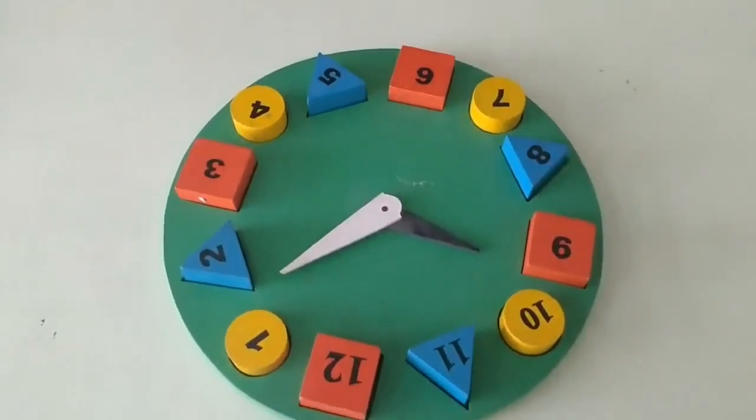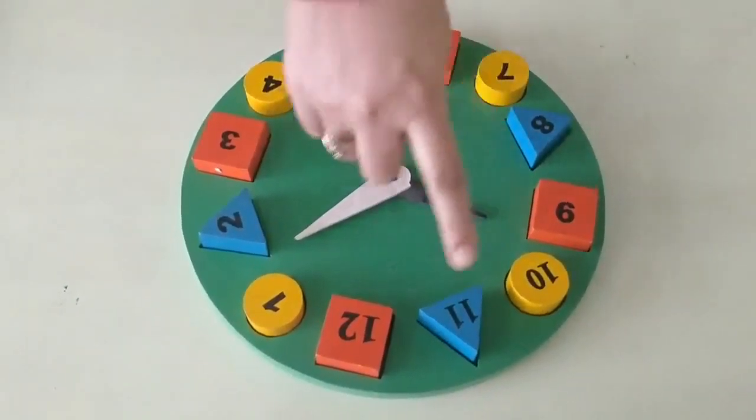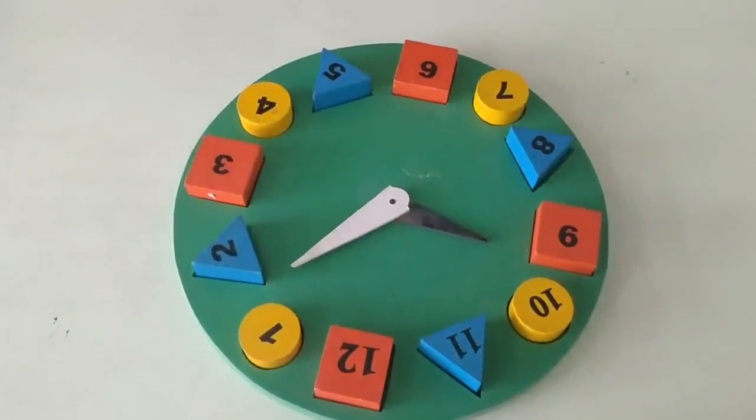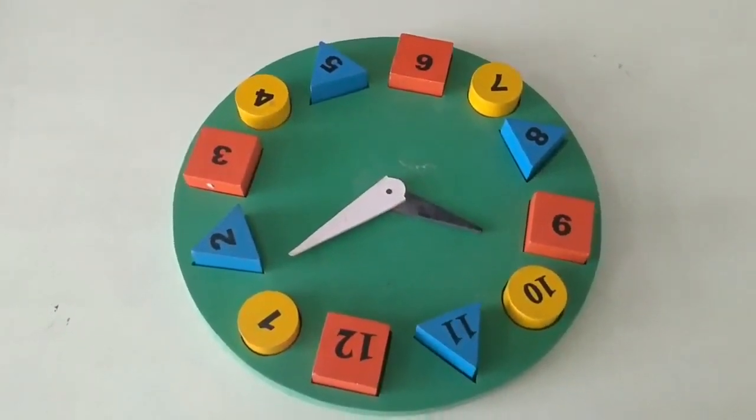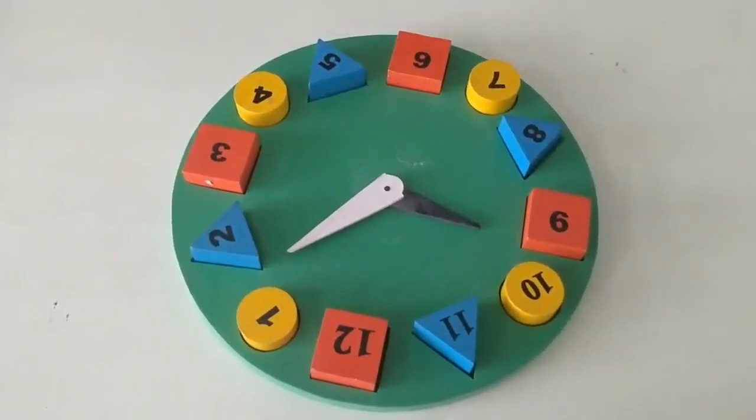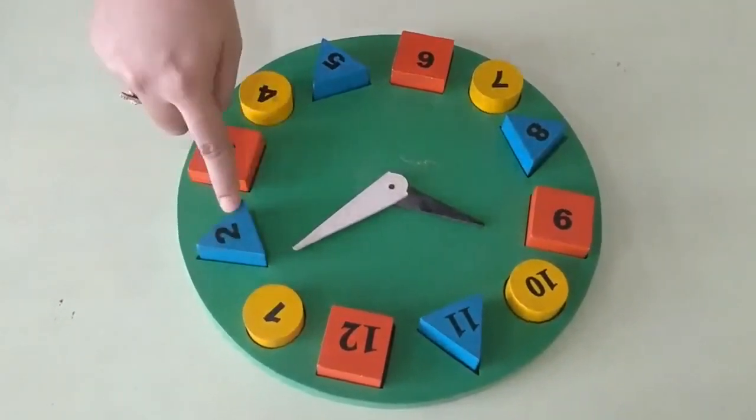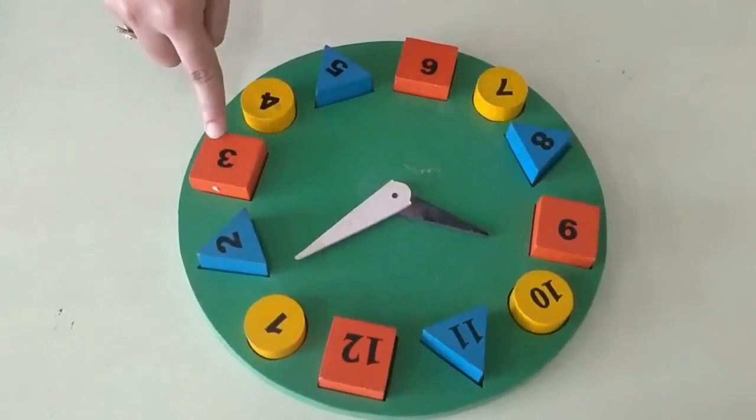Here it is a clock. You can see it is a clock where different numbers are written in different colors. When you will look at this carefully you will see these are forming a pattern. You can see this number one. It is in yellow color. Number two blue. Number three red.